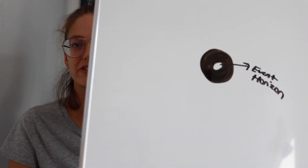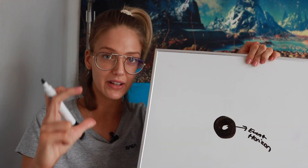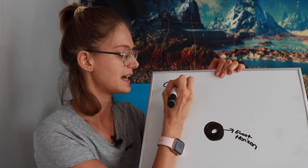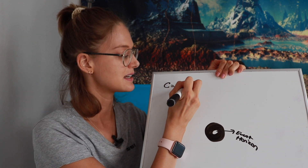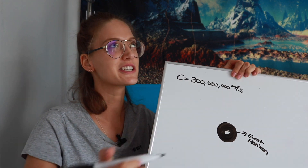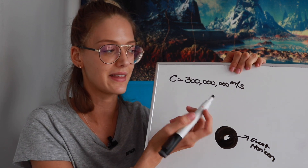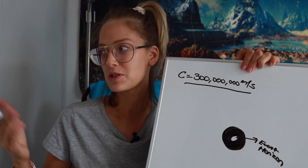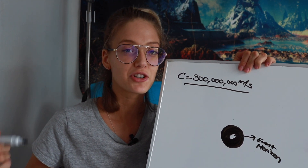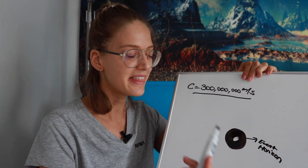The event horizon is usually referred to as the point of no return, because its escape velocity is equal to the speed of light. The speed of light, in metric units, is 300 million meters per second. A helpful way to understand that: if you go to your door where the doorknob is, that's about one meter — so the speed of light can travel 300 million of those doorknob heights in one second.